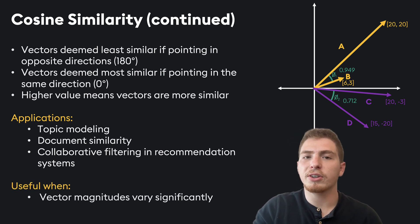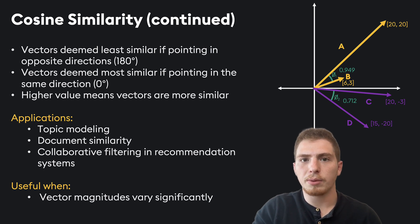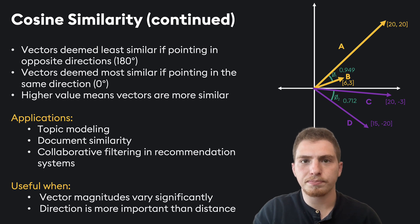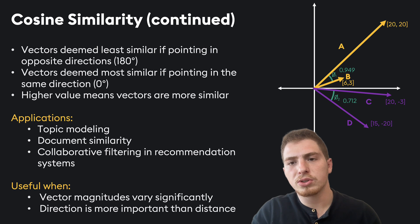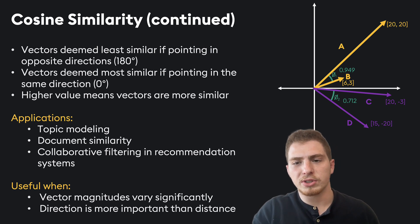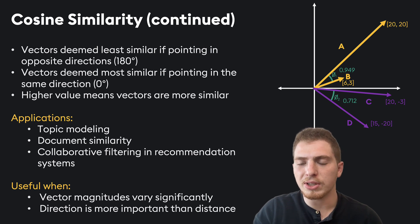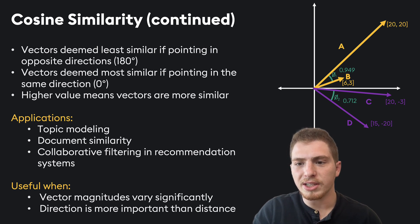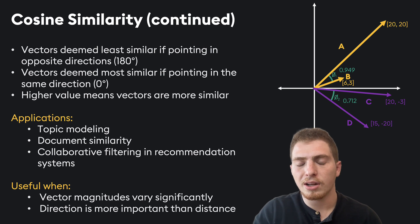Cosine similarity is useful when vector magnitudes vary significantly — for example, if you have many ideas represented and some are represented more strongly than others. You can get more conceptual similarities by using cosine similarity as a metric. It's also useful when direction is more important than distance, since it completely ignores the relative strength of vectors. Here, vectors A and B are very different in magnitude but more similar than C and D, which have nearly the same magnitude. We can think of B as the query vector and A as a document vector — conceptually very similar, resulting in a high similarity score.